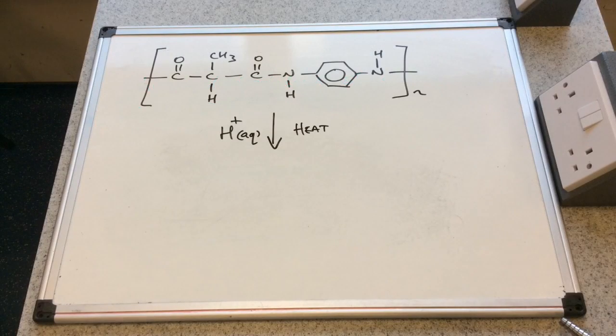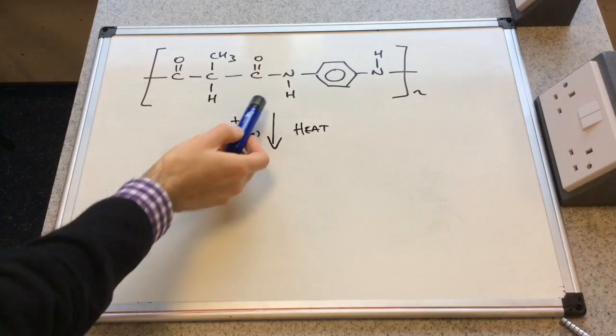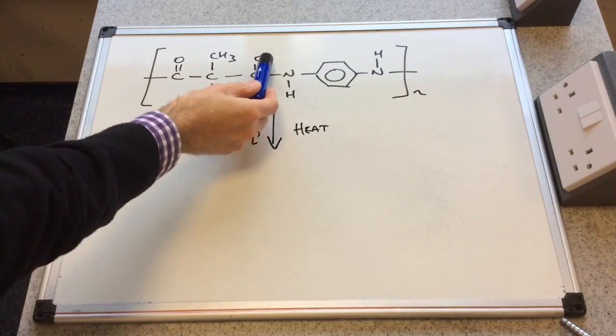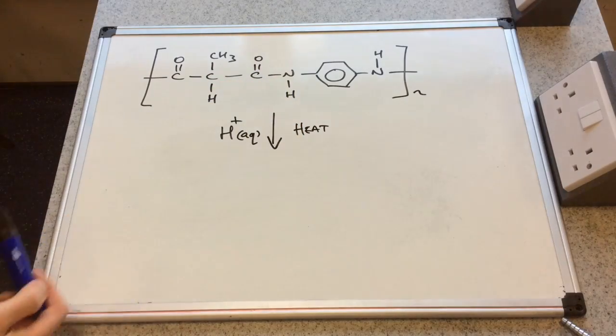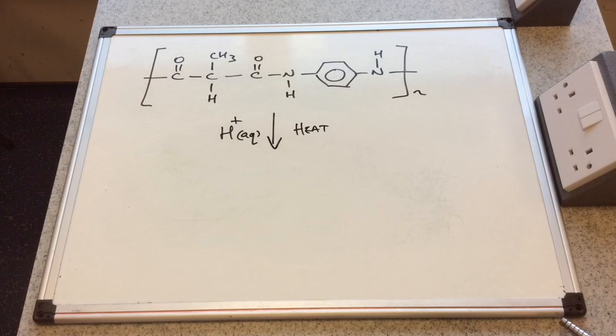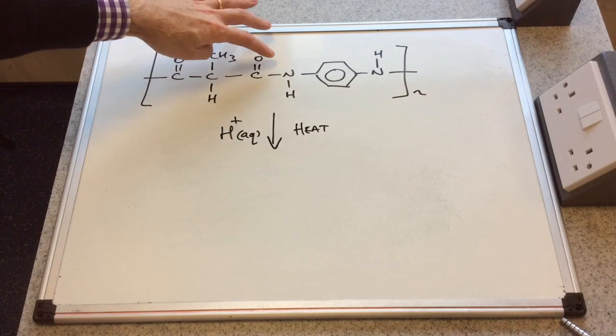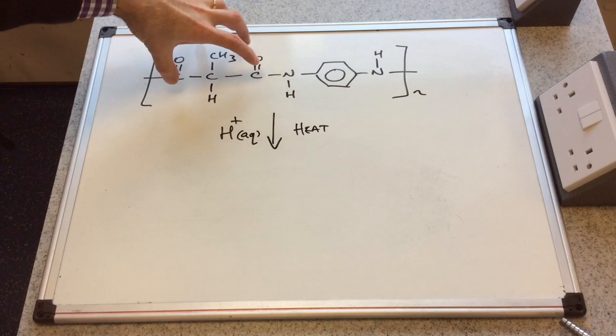So we'll start by looking at the acid hydrolysis of this polyamide. You can see the amide group here and it's this C-N bond that's going to be broken by the water. So if we think what's going to form on the left hand side of this bond,